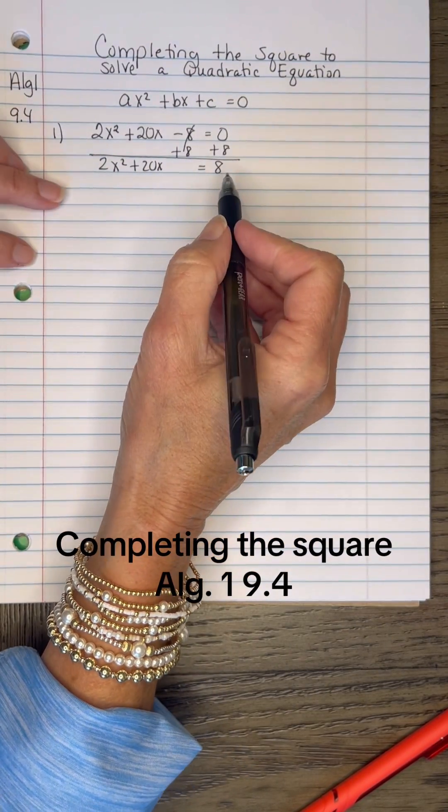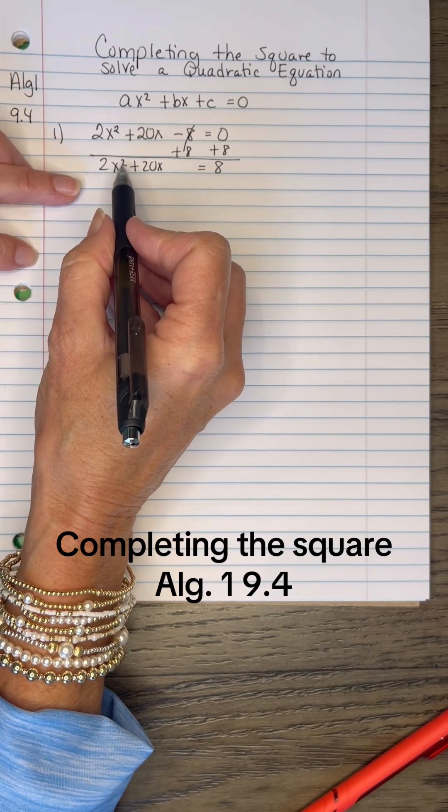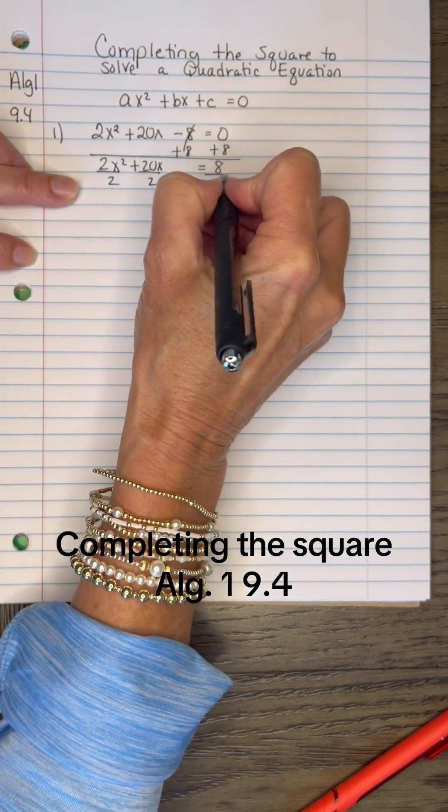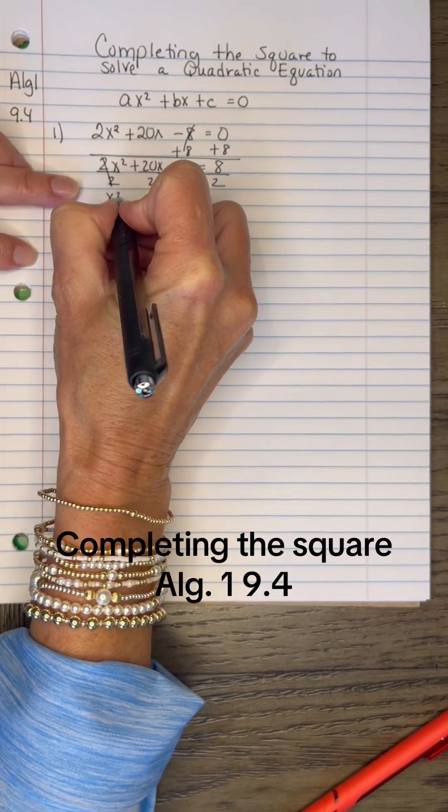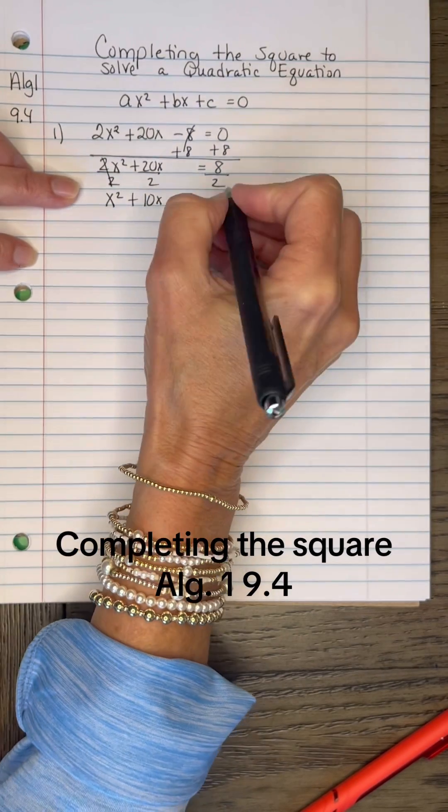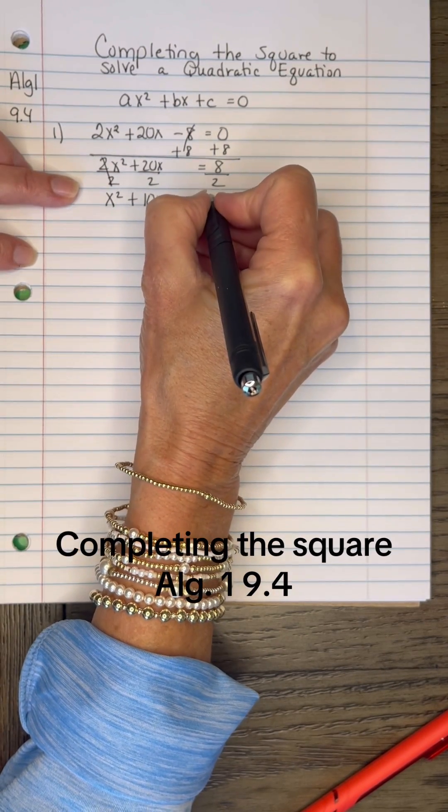We can't complete the square if there is a number that's not 1 in front of X squared, so I'm going to divide everything by 2. Then I'll have X squared plus 10X, leave a space for that C that's perfect, and 8 divided by 2 is 4.